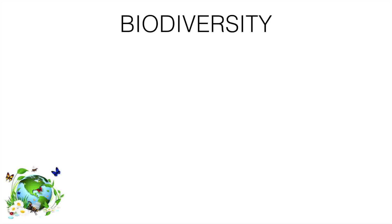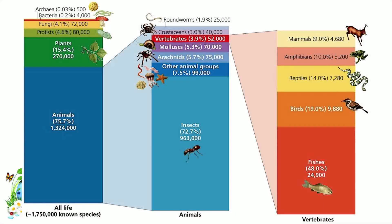There are two million known animal species, and this is divided into several parts. There are 1.3 million animals in this group, and from these animals, almost one million are only insects, and there are 52,000 vertebrates. Out of this 52,000, mainly there are 25,000 fishes, and mammals are only 9%, that is 4,000 to 5,000 mammals available on the earth.